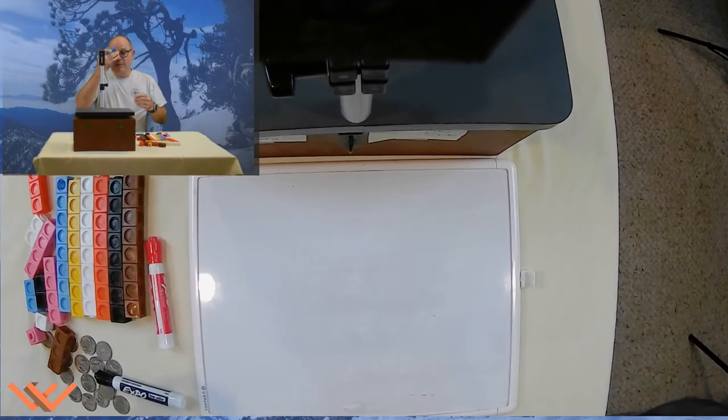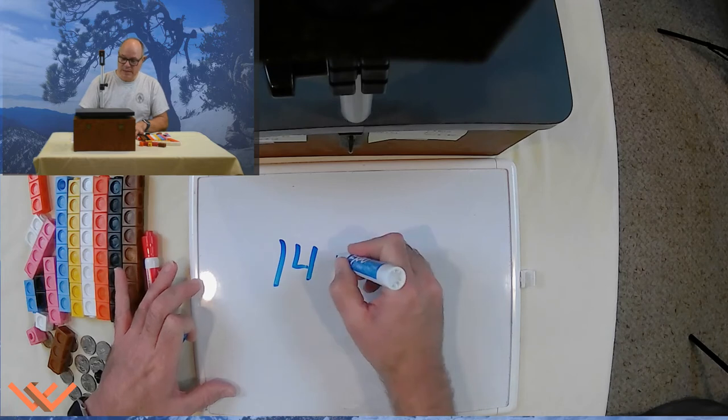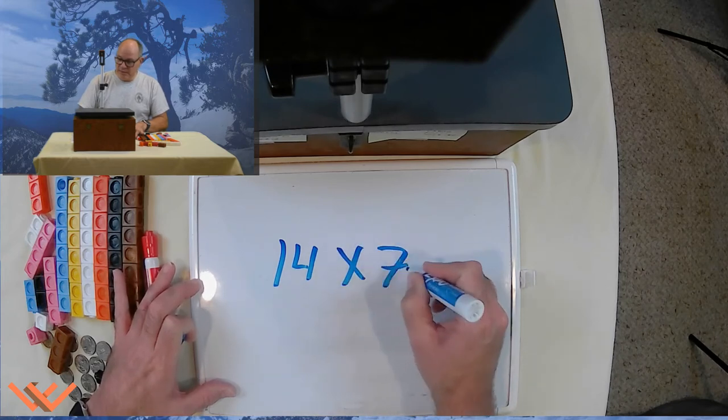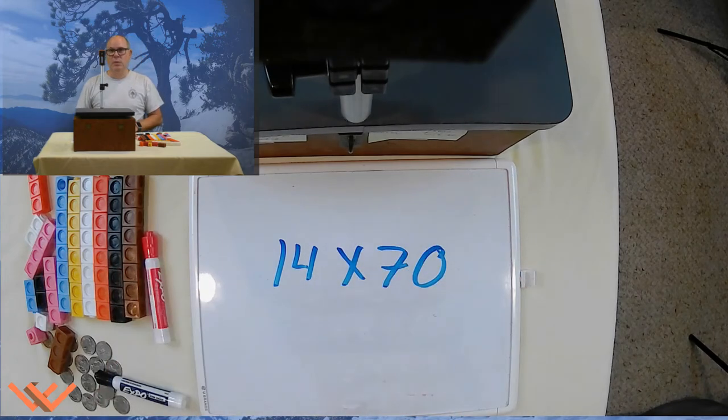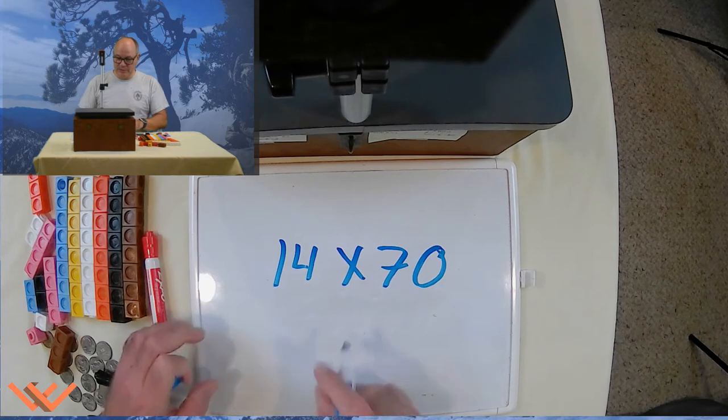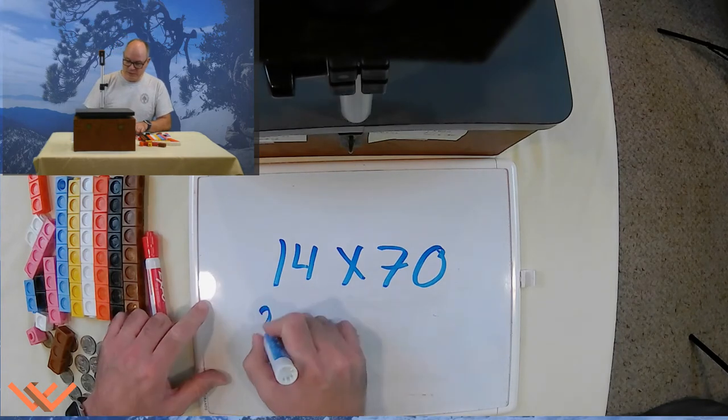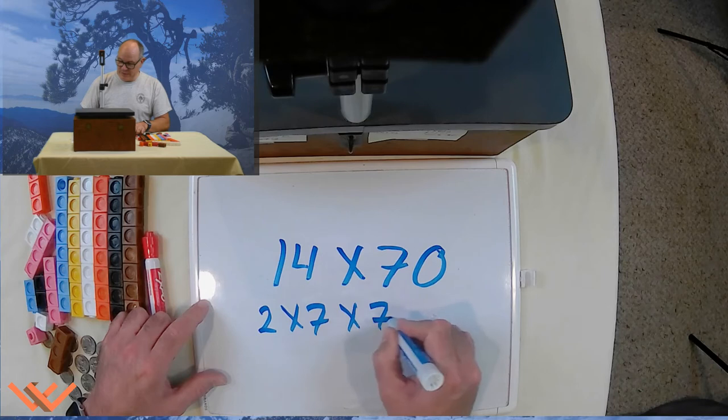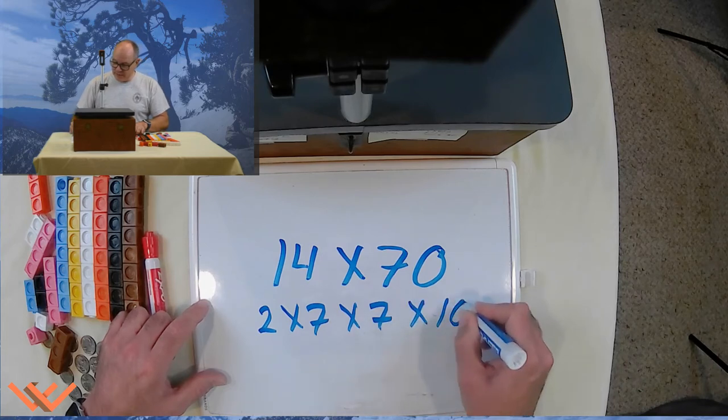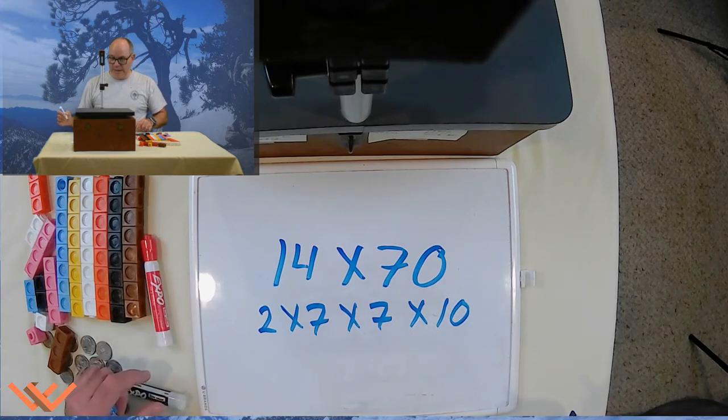So now, what happens if we have something like, let's say, 14 times 70. Uh-oh. But wait, there's a solution. Because we could look at this and say, well, that's 2 times 7 times 7 times 10. How did I get that?